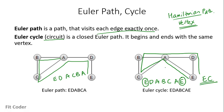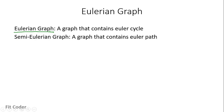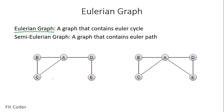So basically we visit each edge exactly once, and if the starting and the end is the same then that path becomes the Euler cycle. A graph that contains an Euler cycle is known as an Eulerian graph, and a graph that contains an Euler path is known as a semi-Eulerian graph. The left side graph contains an Euler path so it is a semi-Eulerian graph, and the right side one contains an Euler cycle so it is an Eulerian graph.